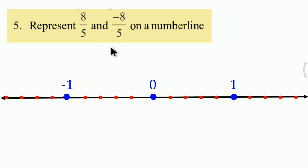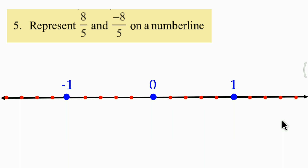Now for 8 upon 5, the numerator is 8. Starting from 0, count 8 parts: 1, 2, 3, 4, 5, 6, 7, 8. That point is 8 upon 5 on the number line.